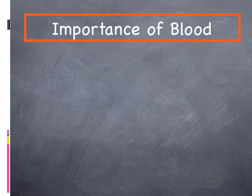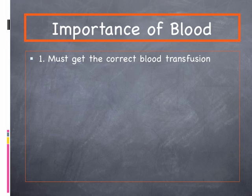Why is blood type important? First, if you need a blood transfusion, you must receive the correct type. If you have blood type A and are given type B by mistake, the antibodies in your bloodstream will attack the B antigens, causing clotting or clumping, which is potentially deadly. We need to know your blood type to ensure you receive the correct transfusion. Hopefully many of you donated at last week's blood drive and understand the importance of a good blood supply.